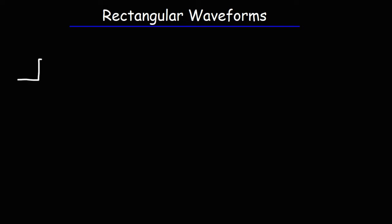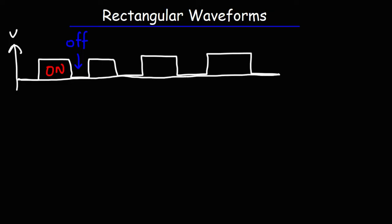The rectangular wave looks like this. Now in a digital circuit this would be the on state and this would be the off state. If you were to plot voltage on the y-axis and time on the x-axis you can get something that looked like that.